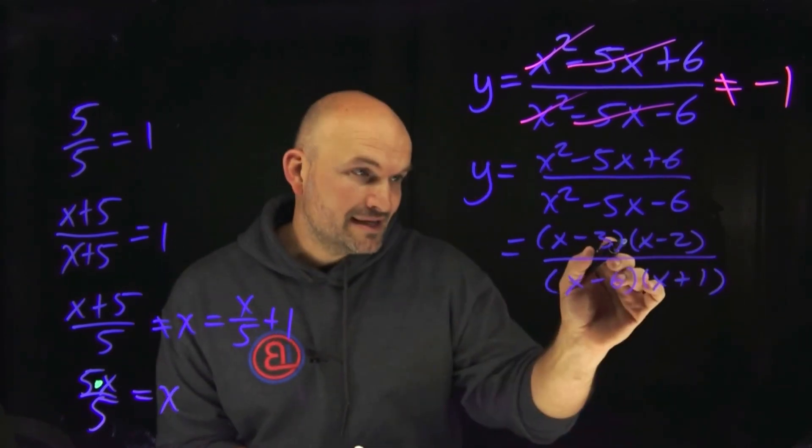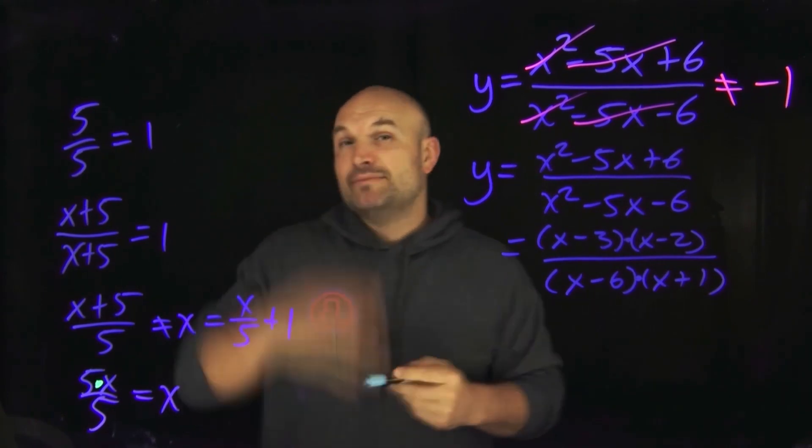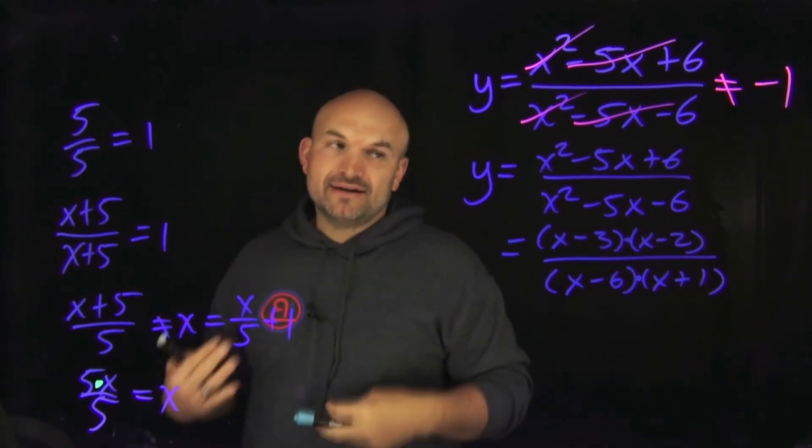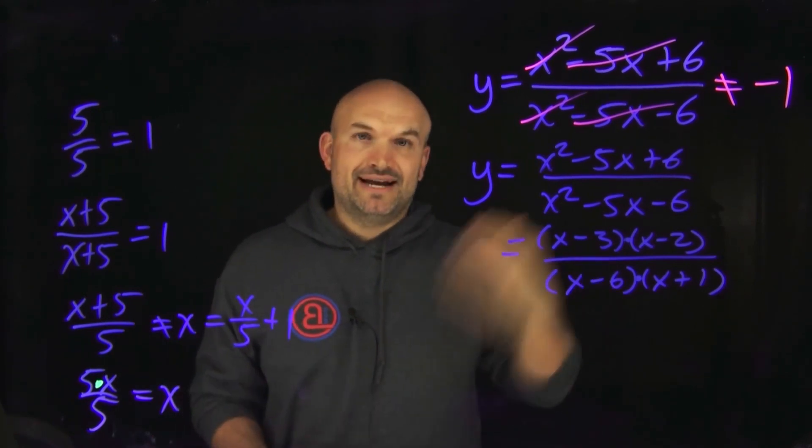Now, again, what I want you to recognize here is my factors now are separated by multiplication. So whatever is the same in the numerator and the same in the denominator can now be divided out. And you can see, guys, nothing can be divided out.